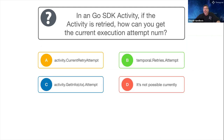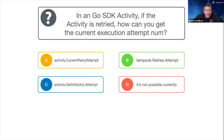In a Go SDK activity, if the activity is retried, how can you get the current execution attempt number? A, with activity.CurrentRetryAttempt; B, temporal.retries.attempt; C, activity.GetInfo passing in the context, dot Attempt; or D, it is currently not possible.